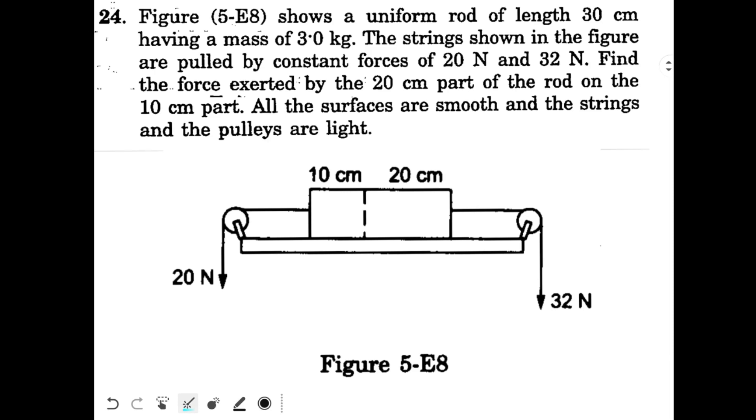We are looking at question number 24 from chapter number 5 of H.C. Varma. The figure shows a uniform rod of length 30 cm having a mass of 3 kg. This is the rod, 30 cm length, mass 3 kg.